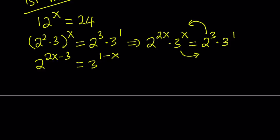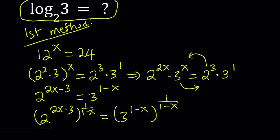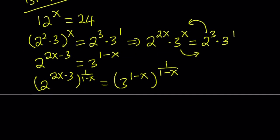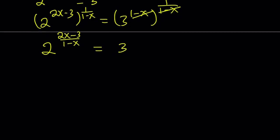Now I was able to get a power of 2 equals a power of 3, which is good. I want to isolate the 3, so let's raise both sides to the power 1 over 1 minus x. We have to make some assumptions here — x does not equal 1, but obviously x does not equal 1 in this context. The 1 minus x cancels out, and on the left-hand side we get 2 to the power 2x minus 3 divided by 1 minus x, and on the right-hand side we get 3. We can log both sides or use the definition — it doesn't really matter.